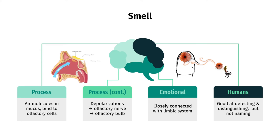How do we smell? Our olfactory system uses a lining of mucus in the top part inside our nose to trap air molecules. These then make contact with olfactory cells, which causes depolarizations based on the type of molecule. These signals then travel via the olfactory nerve to the olfactory bulb in the brain, where the air molecules are perceived as a certain scent. Since the olfactory bulb is so closely connected with the limbic system, or our emotional system, smell has a strong emotional component. This is why a batch of cookies can elicit such strong emotions and evoke old memories. Additionally, humans are good at detecting and distinguishing odors, but not very good at naming them.